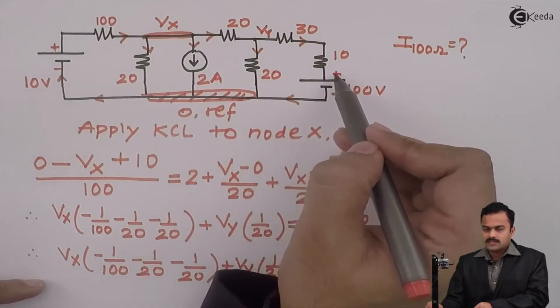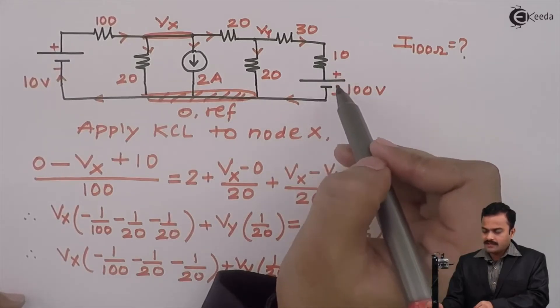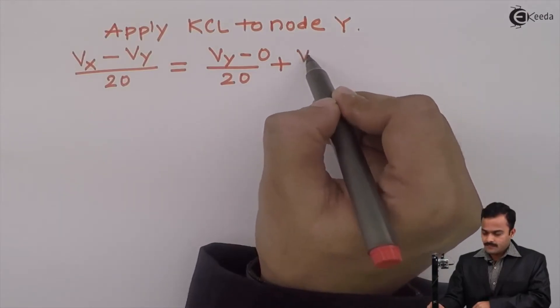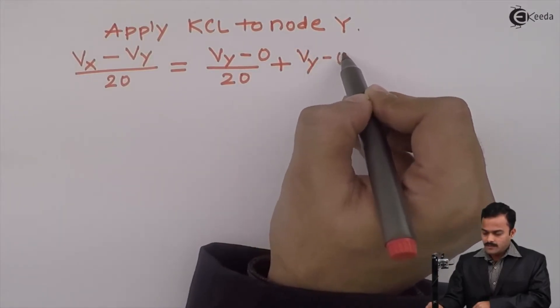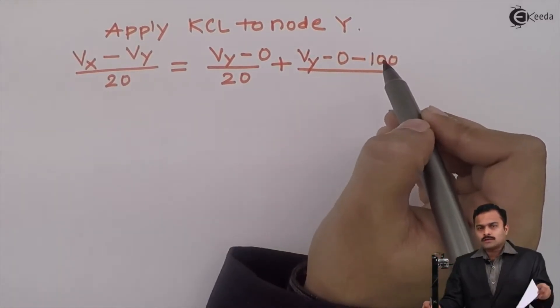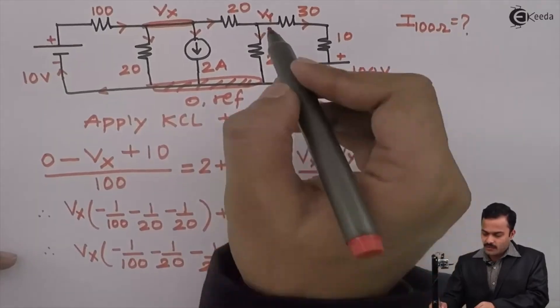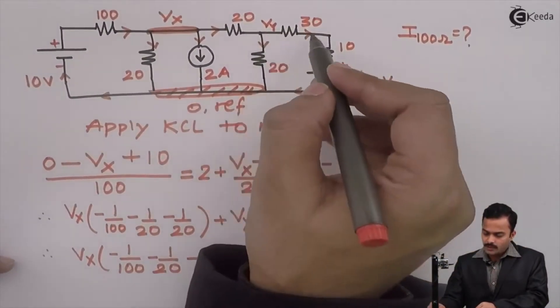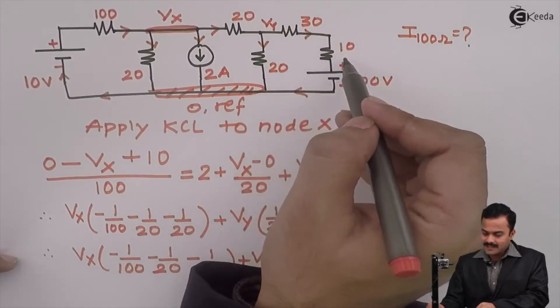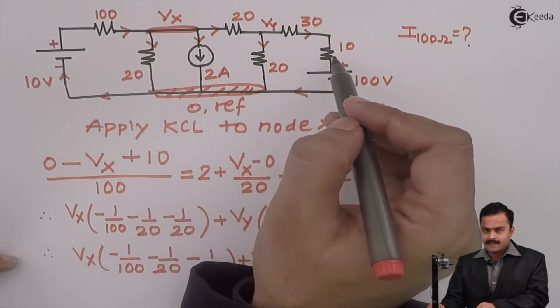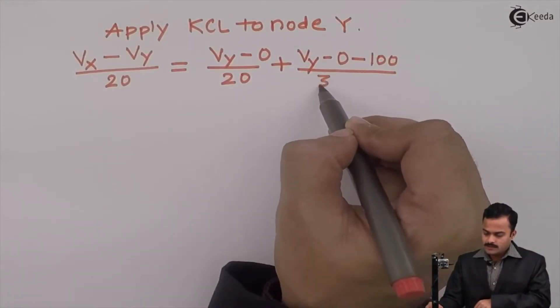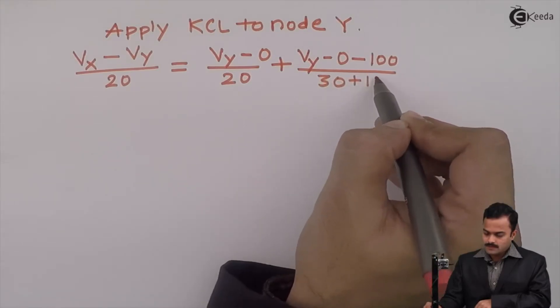I am having voltage drop of minus 100 volts. So the equation is Vy minus 0 minus 100 divided by total resistance of this branch from Y to reference. Total resistance will be 30 plus 10 because 30 and 10 are in series.